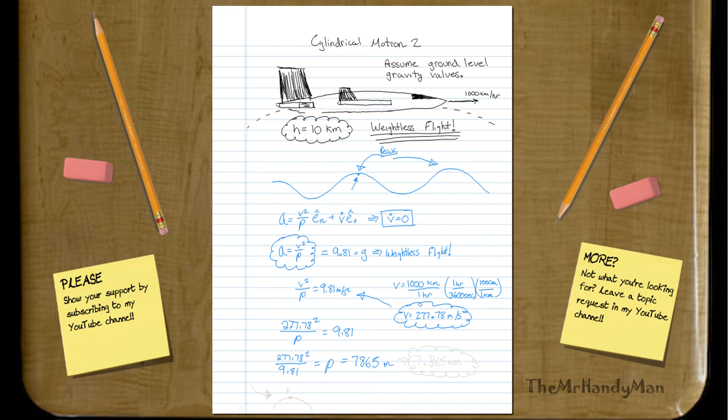That's meters. If you want it in kilometers, that would be 7.865 kilometers. That's the radius of the arch that they need to create so that you'll get this weightlessness feeling at that one point.